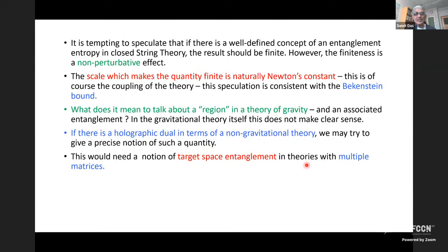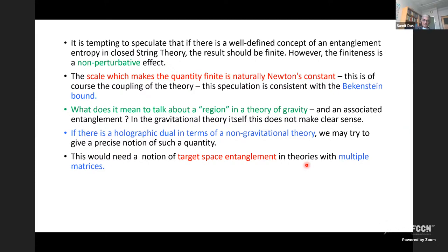It is therefore tempting to speculate that if there is a well-defined concept of entanglement entropy in string theory even in higher dimensions, the result should be finite, but the finiteness is a non-perturbative effect, and the scale which makes this quantity finite is Newton's constant. We must address the question: what does it mean to talk about a region in a theory of gravity? In a gravitational theory this doesn't quite make sense because of diffeomorphism invariance, but if there is a holographic dual in terms of a non-gravitational theory we may give a precise notion. We therefore need a notion of target space entanglement in theories with multiple matrices.